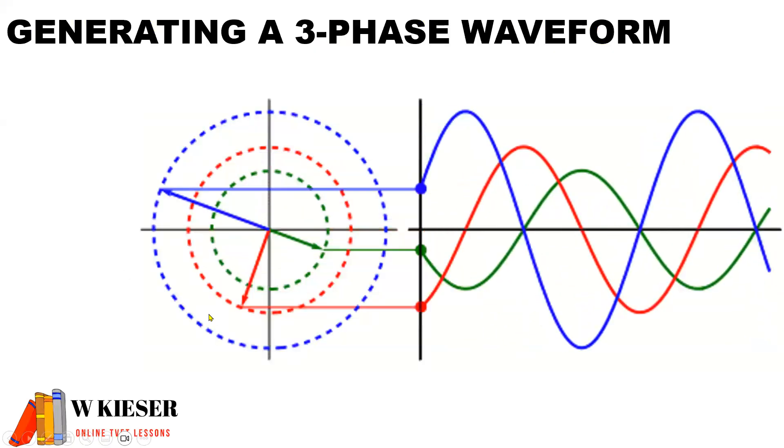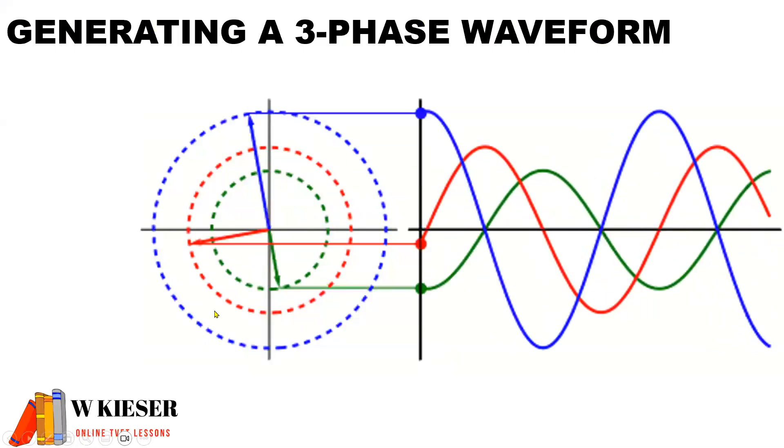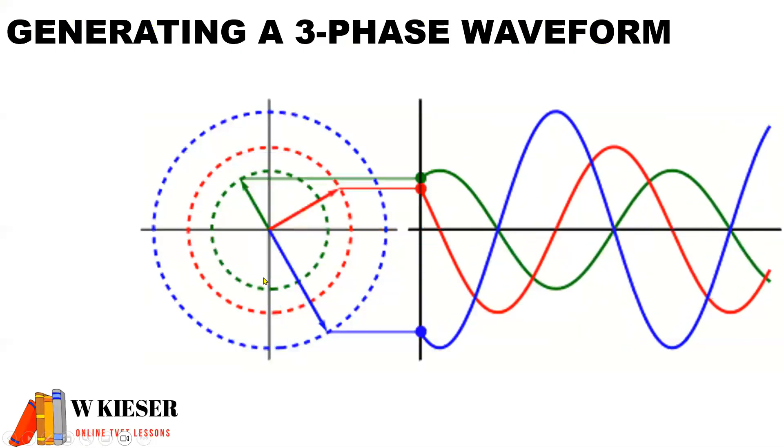For three phase power, we use three coils which turns 360 degrees and generates three sine waves.